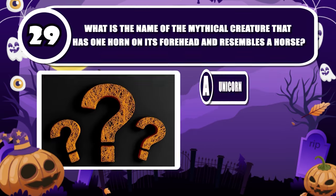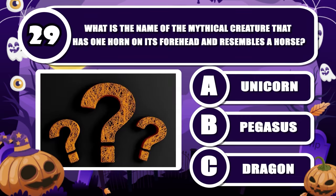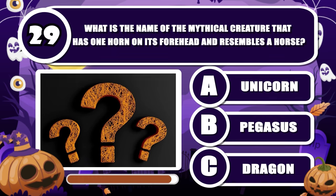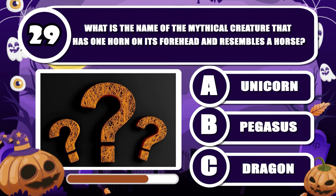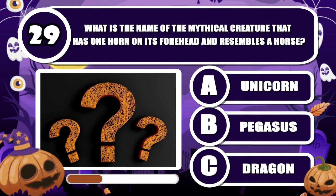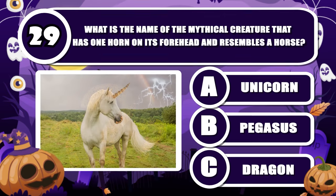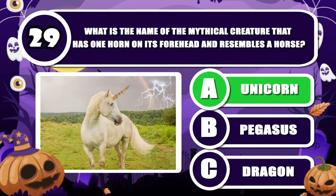What is the name of the mythical creature that has one horn on its forehead and resembles a horse? The correct answer is Unicorn.